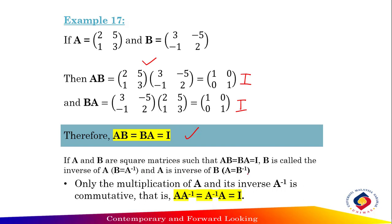Only the multiplication of A and its inverse is commutative. That is, A times A inverse equals A inverse times A equals the identity matrix.